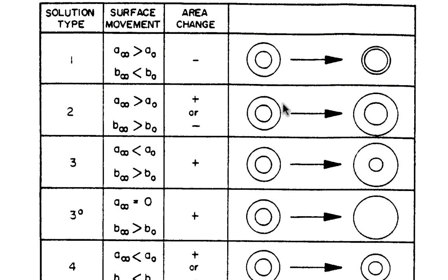However, there are other results that are less expected depending on particular choices of parameters such as this one where a_∞ is greater than a₀ so the inner radius and the outer radius both increase which could result in an increase or a decrease in the cross-sectional area.